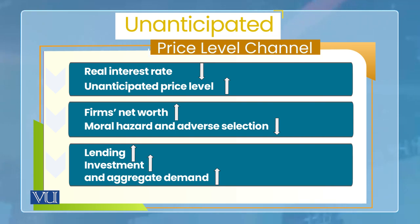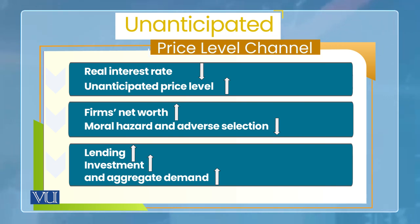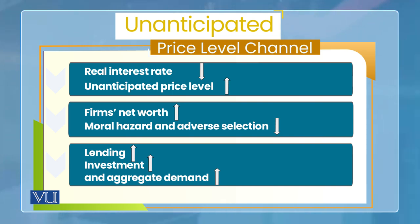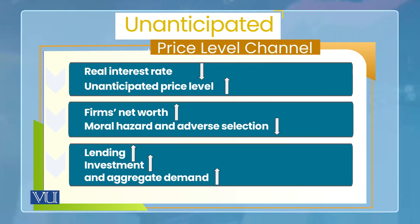Goods and services کی demand بڑھنے سے ان کی prices بڑھ جاتی ہیں۔ چونکہ firm کی debt obligations کی real value کم ہو جاتی ہے، firms کی net worth بڑھ جاتی ہے۔ جب net worth بڑھتی ہے تو moral hazard میں involve ہونے کی tendency کم ہوتی ہے اور lenders کے لیے adverse selection کا problem بھی minimize ہو جاتا ہے۔ اس سے financial frictions کم ہوتی ہیں، lending بڑھتی ہے، investment بڑھتی ہے، اور aggregate demand increase ہو جاتی ہے۔ اس channel کی special چیز unanticipated price level change ہے۔